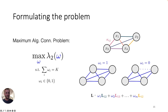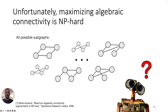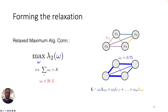To formulate this problem, we associate with each edge a weight that's either zero or one corresponding to whether we keep or discard that edge, and we find the subgraph containing exactly K edges that maximizes algebraic connectivity. Unfortunately, the combinatorial nature of this makes it challenging — formally it's NP-hard, in the worst case requiring us to examine all possible subgraphs with K edges. The difficulty boils down to the hard constraint of deciding whether to keep or discard an edge.